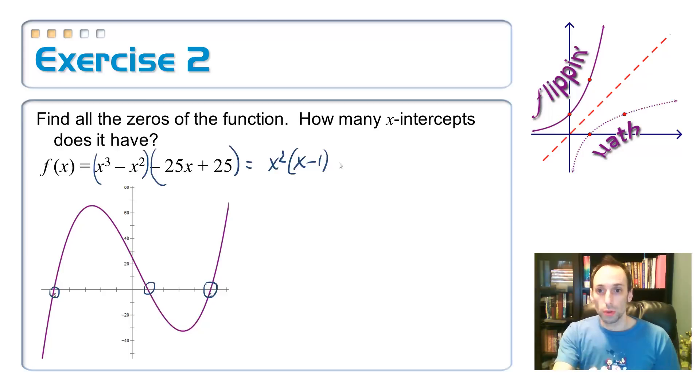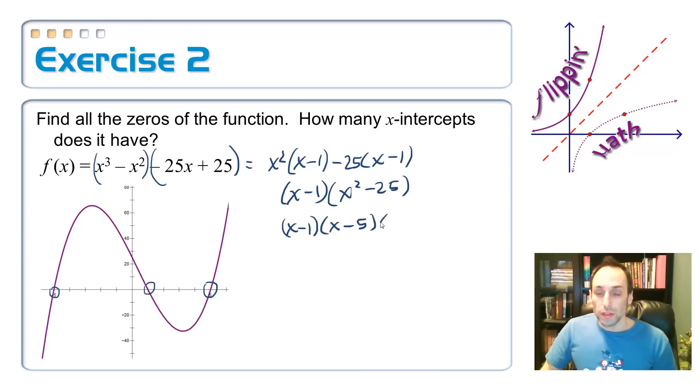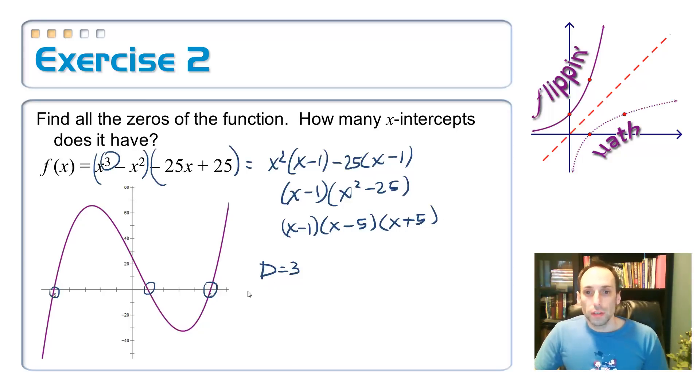So from the first set of terms, I can pull out x squared. And then in parentheses, I'll have x minus one left over. From the second set of parentheses, I can pull out a 25. I'm going to make it negative so it matches up with the first set of parentheses. So minus 25 and then x minus one. They share a common factor, x minus one. And then what's left over is x squared minus 25. So the second set of parentheses, that's the difference of two squares. So x minus one, x minus five, and x plus five. So I can see that I have a degree of three. I can see from the graph and from the factored equation that I have three zeros and three x-intercepts.